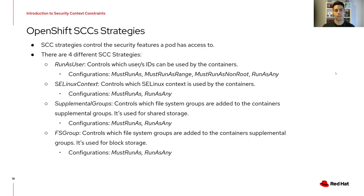SCC strategies control the security features that a pod has access to. There are four different SCC strategies. The first is run as user, which controls which user IDs can be used by containers. There are four configurations: must run as (defines a specific UID), must run as range (defines a range of UIDs), must run as non-root (any UID except UID 0), and run as any (any UID including root UID 0).